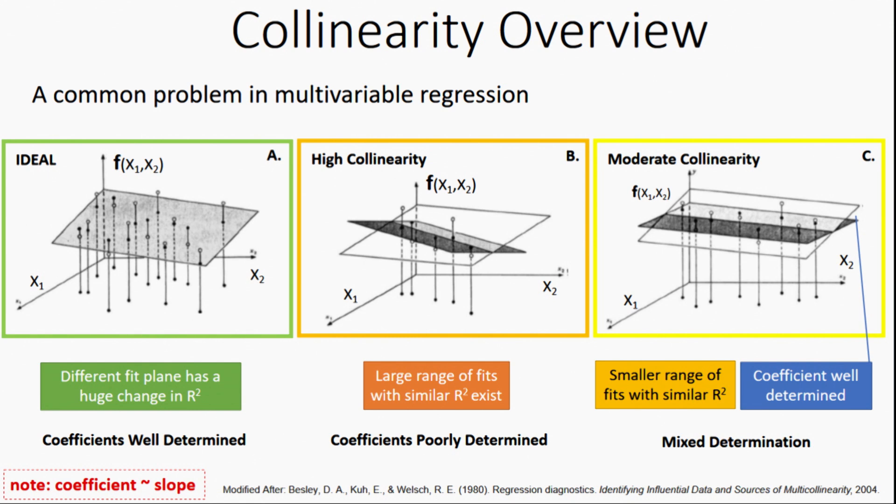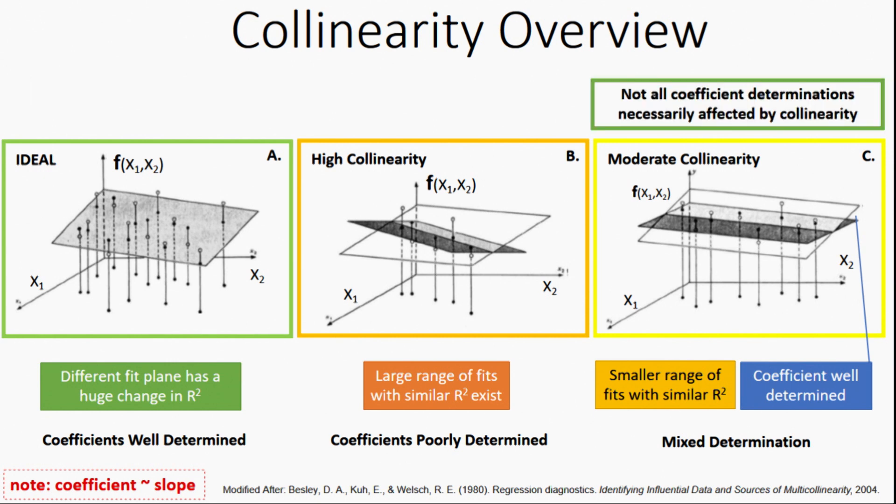We could have a case of moderate collinearity where we have a small range of planes that might fit in there, and we could have a case where not all of the coefficient determinations are affected by collinearity. If you look at the slope on X2 right there, it's pretty constant no matter which plane you fit in there.